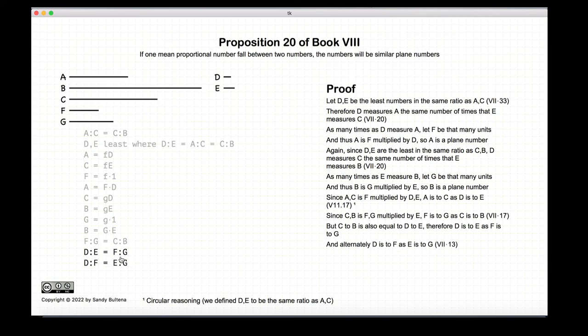And now that we have this ratio, we can do the alternatively or cross multiply or however you want to phrase it. And from Proposition 13 of Book 7, we know that if D to E is equal to F to G, then the ratio of D to F is equal to E to G.